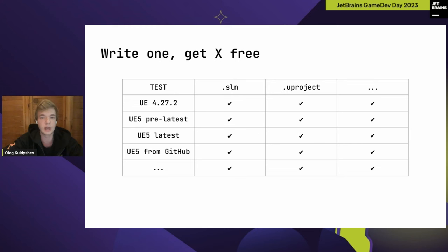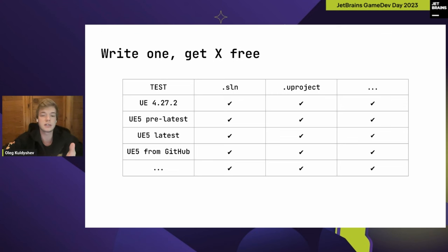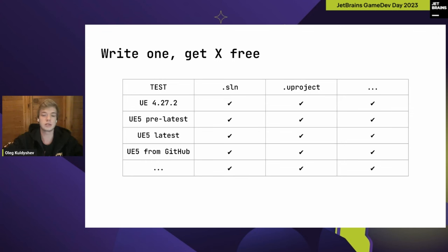This approach of running tests can be called 'write one, get X free.' In a table where columns are the ways of opening Unreal Engine projects and rows are UE versions, each test corresponds to a scenario that is multiplied by the number of project opening ways and the number of UE versions. Currently we have two project models: Visual C++ solution and the native Unreal Engine New Project Model. If we invent a new way to open UE projects, we could write tests for it with minimal effort.